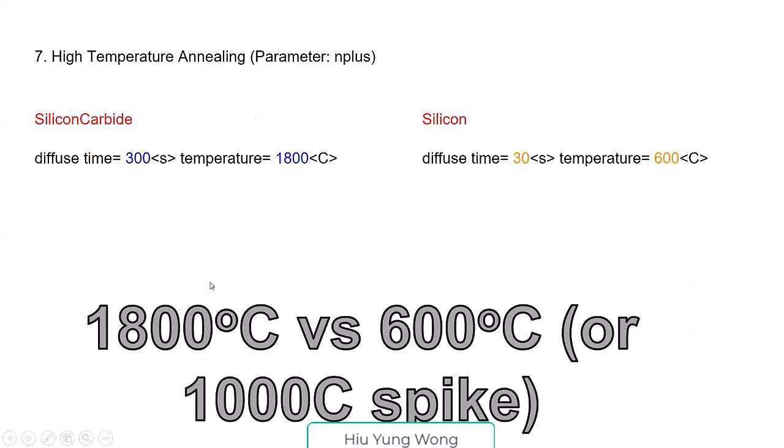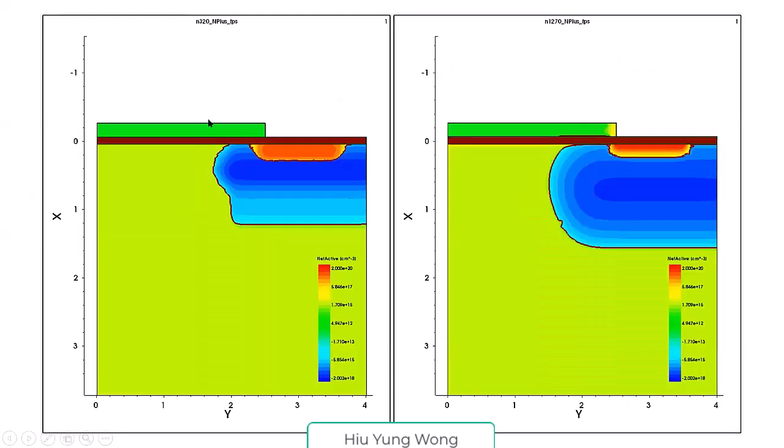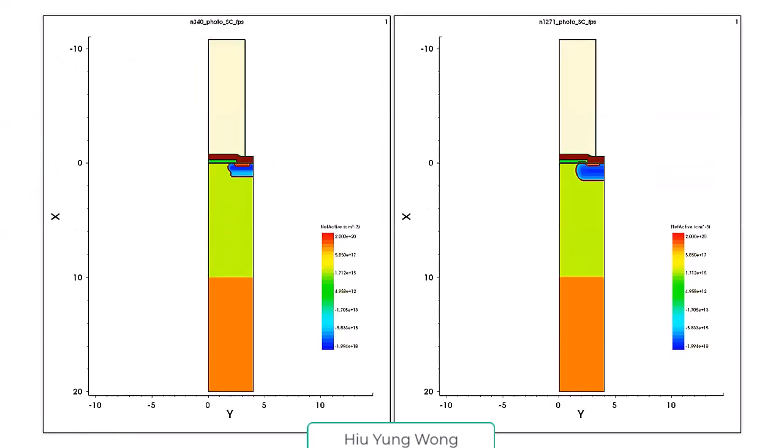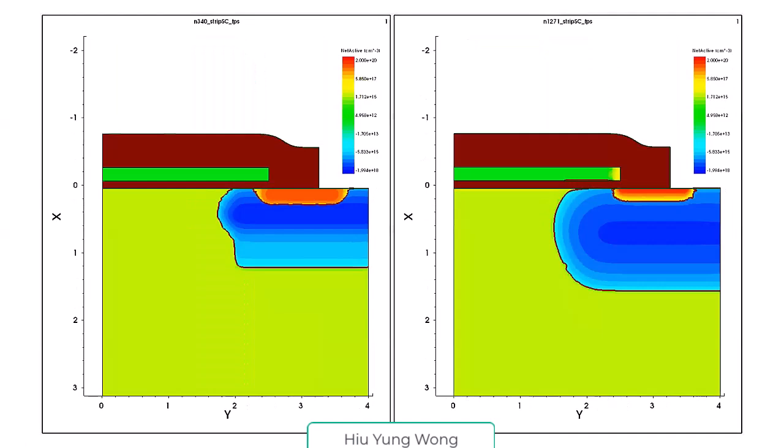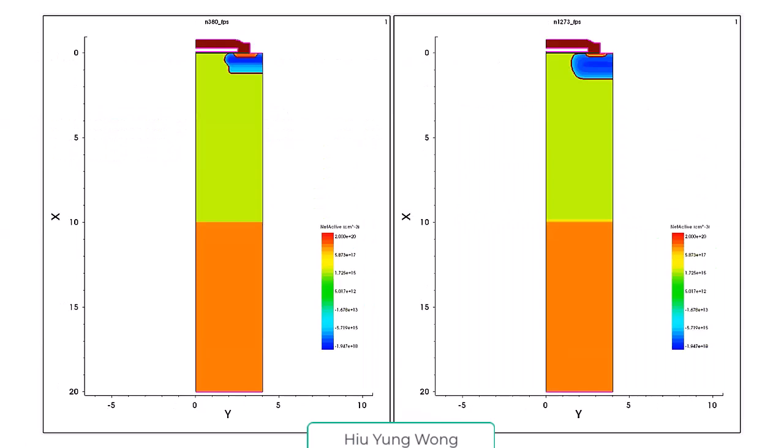The point is after activation you see the junction is similar even at such high temperature. This is the source, this is the body. Then we do some preservation layer etching. Going fast. Then the final deposition and then contact.